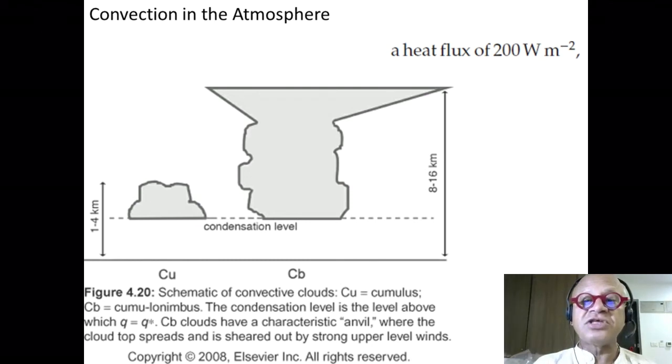You can see that as the cumulonimbus reaches 16 kilometers, we have already mentioned the tropopause but haven't exactly said what its height is. If it hits the tropopause, it's going to have this anvil where the cloud top spreads horizontally.